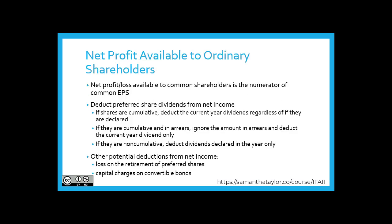The net profit or loss available to common shareholders is the numerator of basic EPS. We then deduct preferred share dividends from net income. If the shares are cumulative, we deduct the current year dividends regardless of whether they are declared. If they are cumulative and in arrears, we ignore the amount in arrears and deduct the current year dividend only.